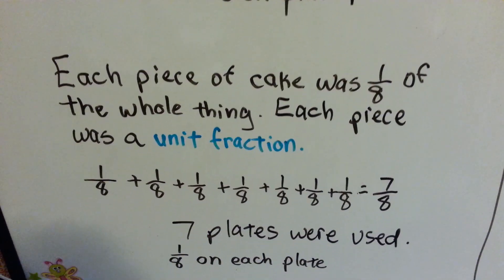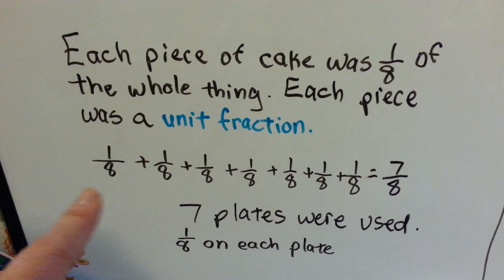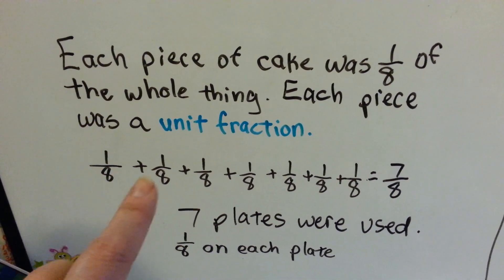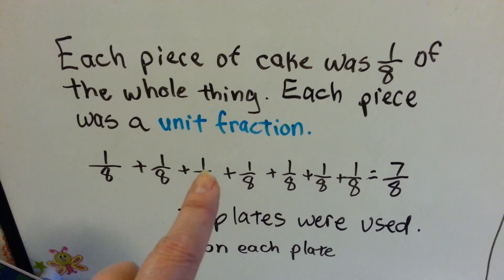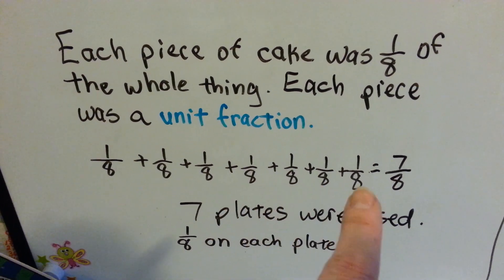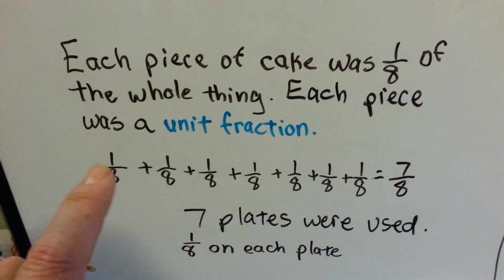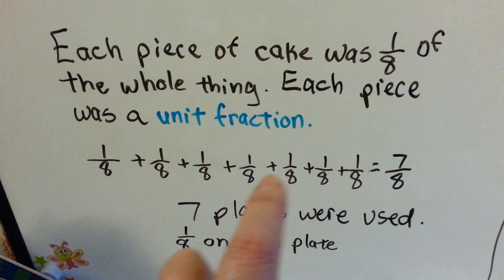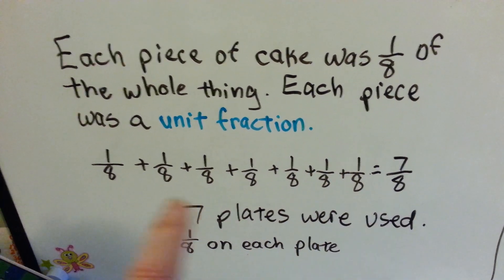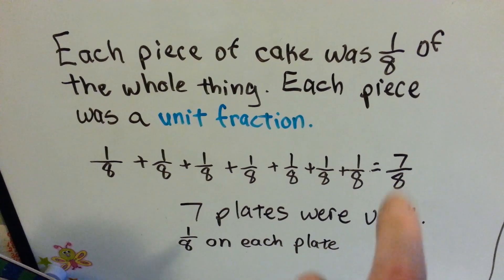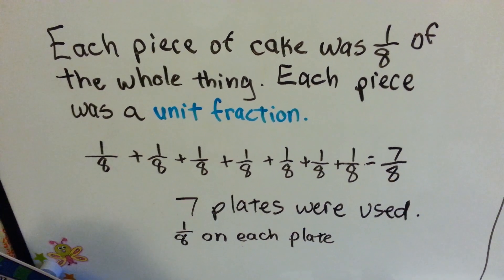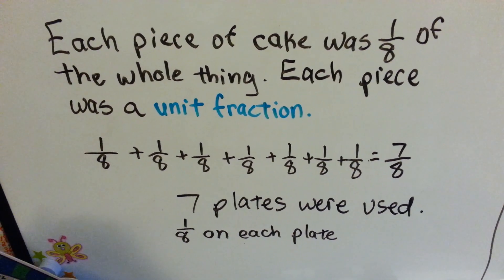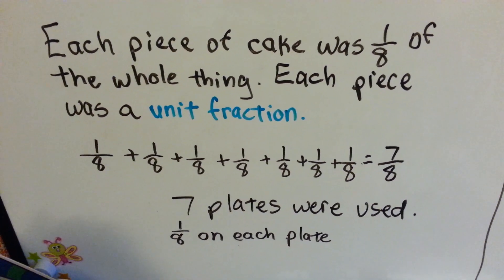So, if we did 1 eighth 7 times — 1 eighth plus 1 eighth plus 1 eighth, and again, and again, and again, and again, and again — and we added these all up, we'd have 1, 2, 3, 4, 5, 6, 7 eighths. We'd have 7 eighths. So, 7 plates were used, and she put 1 eighth of the cake on each plate.